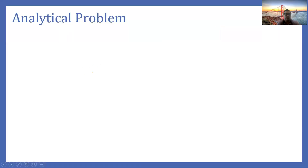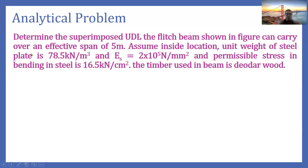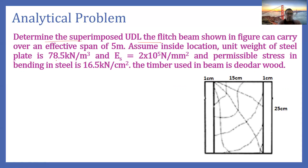Hello, welcome back. In this part we will solve an analytical problem to understand the flitch beam. This is the problem we have to solve: we need to determine the superimposed UDL the flitch beam shown in the figure can carry. The effective span of the flitch beam is 5 meters, and we assume it is in the inside location.